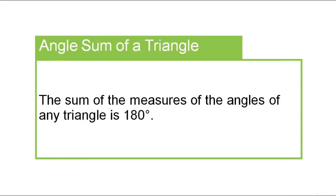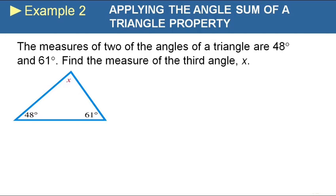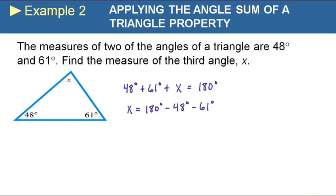Now we come to the angle sum of a triangle property: the sum of the measures of the angles of any triangle is 180 degrees. It doesn't matter what kind of triangle — the three angles always add up to 180. For example, if two angles of a triangle are 48° and 61°, the missing angle x equals 180 − 48 − 61 = 71°.